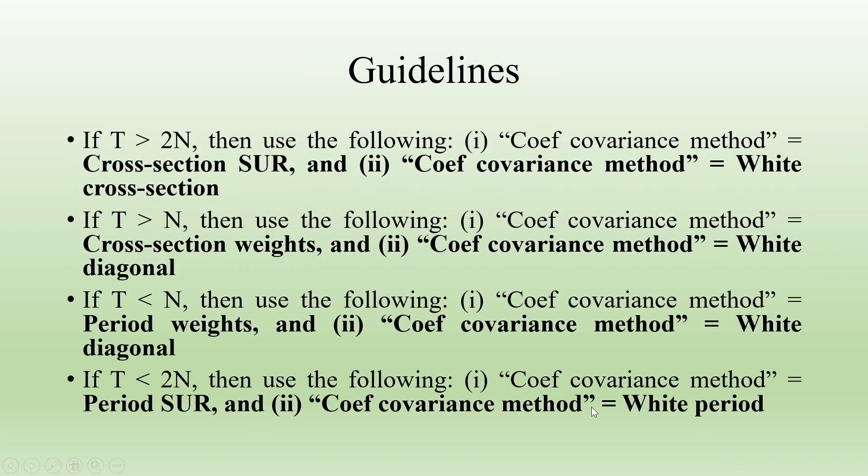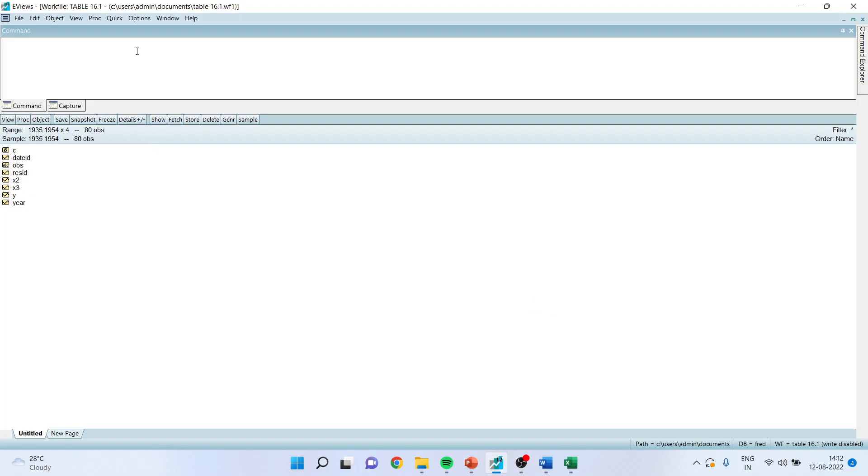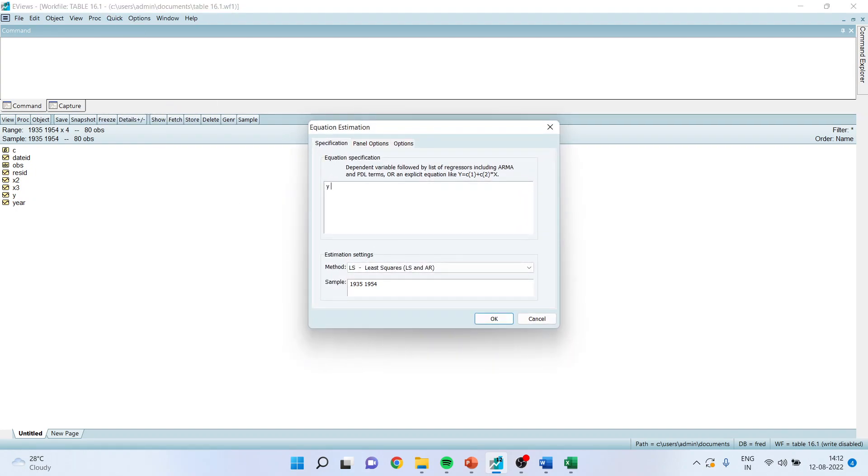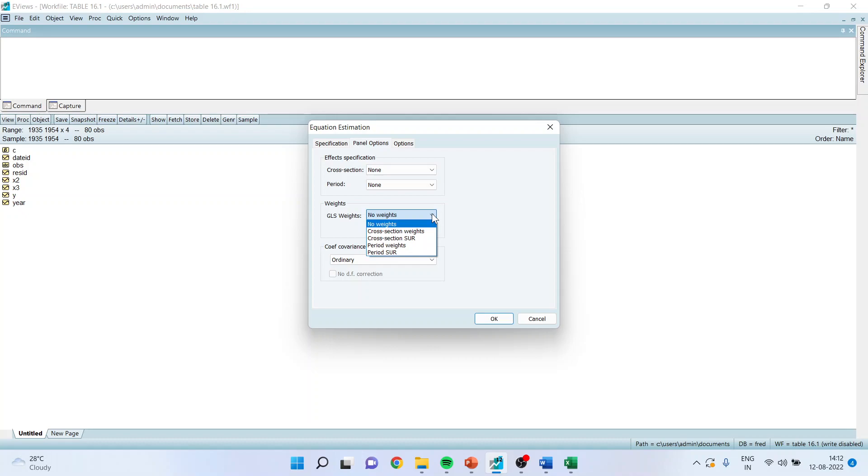Now how to carry out this particular thing, let us see in eViews. I will go in quick estimate equation y c x2 x3. I will go in panel options and activate cross-section seemingly unrelated regressions and here I will activate white diagonal. It is a coefficient covariance method. Click OK.